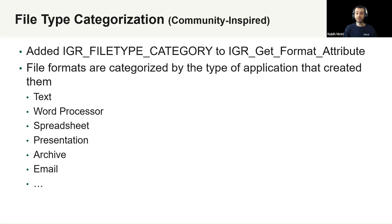The next community-inspired enhancement is file type categorization. It's always been possible to identify and get information about file types, but we've now made it even easier to know the type of application that would have created that file. Using the same IGR get format attribute method that's existed, it now includes the option to get the file type category — this can be anything from text, to spreadsheet, to archive, with a full list available in the documentation.